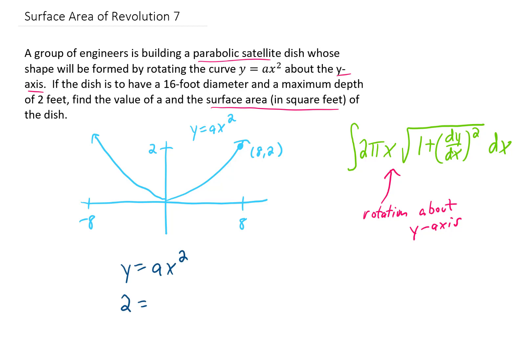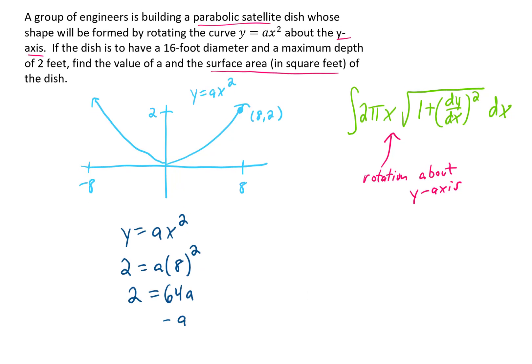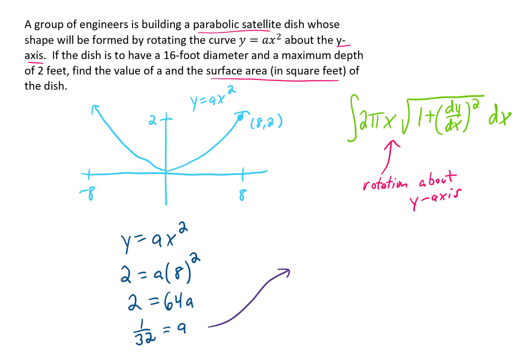That means we can plug in 2 for y and 8 for x, and solve for a. You'll notice that 2 equals 64a, or a equals 1 over 32. This gives us the actual function that we're going to rotate about the y-axis. That function is 1 over 32 x squared.